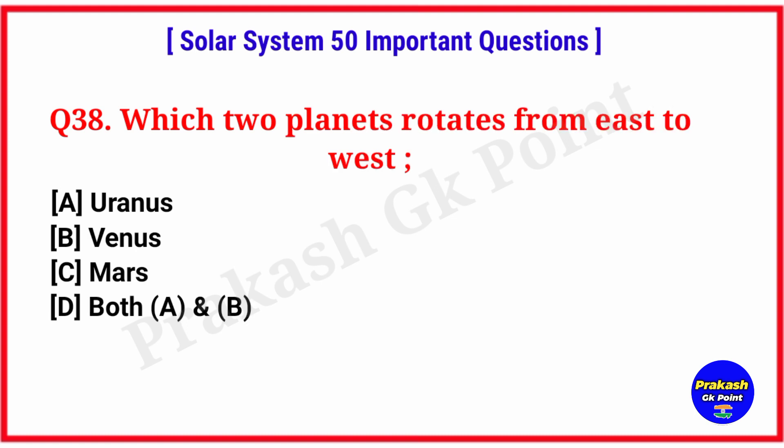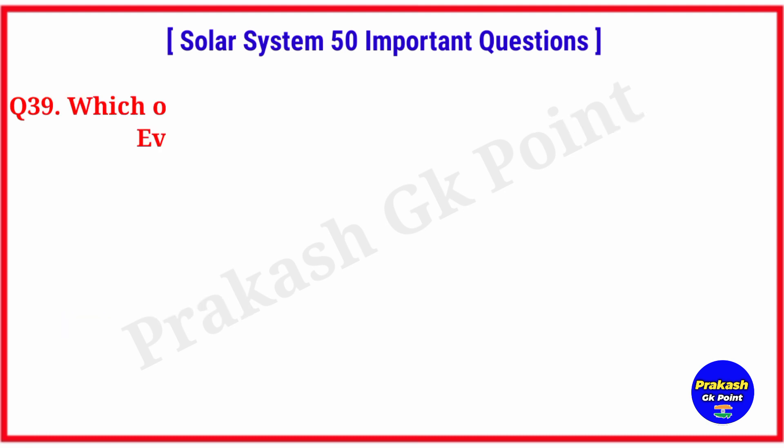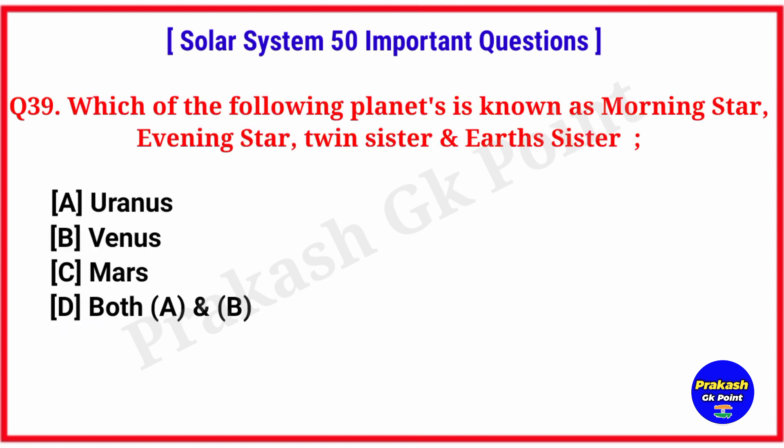Which two planets rotate from east to west? Answer: option D, both A and B, Uranus and Venus. Which of the following planets is known as the morning star, evening star, twin sister, and earth sister? Answer: option B, Venus.